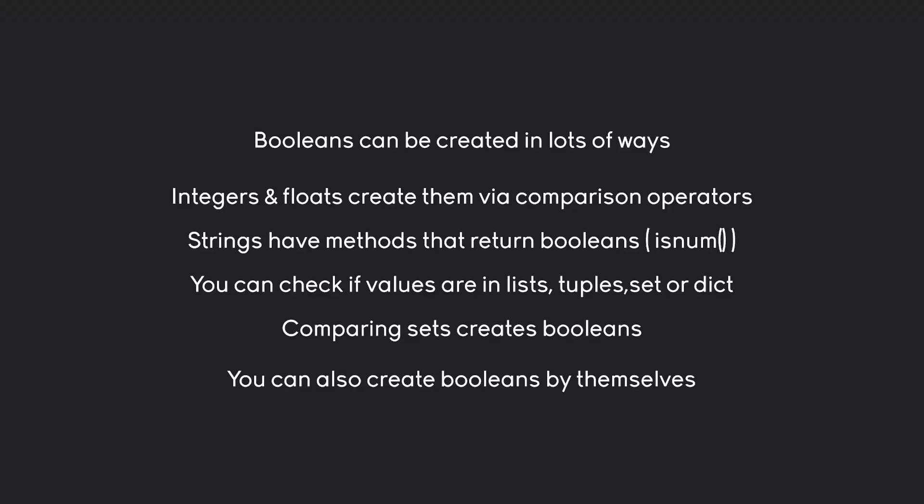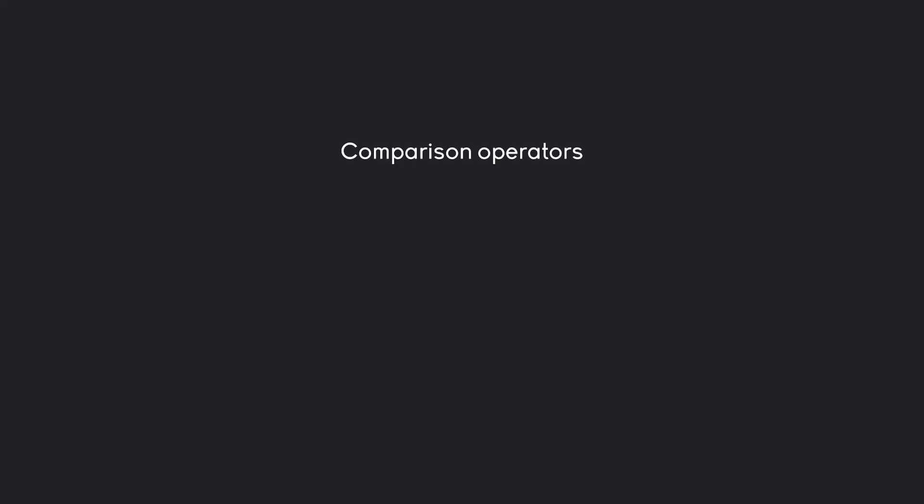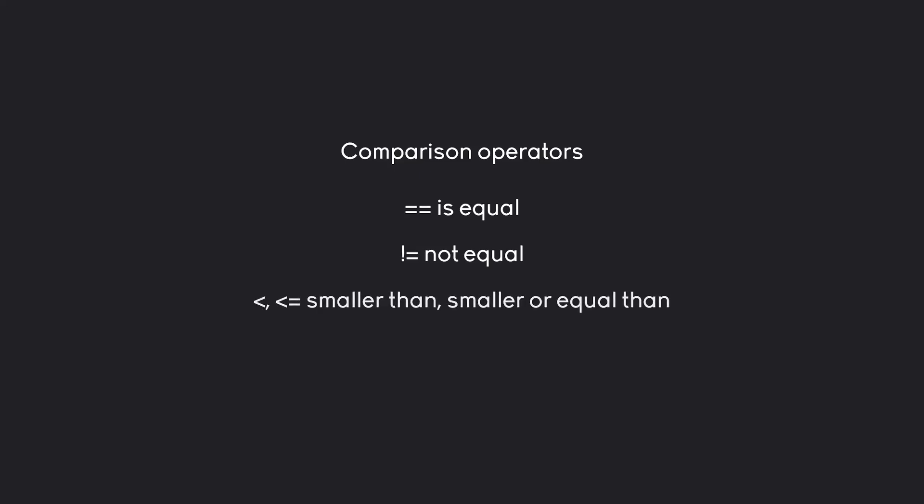Let's go through this entire list and start with comparison operators — there are quite a few. The one we just used is the double equal sign, which checks if two values are equal. We use two because a single equal sign is reserved to assign a data type to a variable. To check if two numbers are not equal, we have the exclamation mark equal operator. Finally, we have smaller-than and smaller-or-equal to check those conditions, and greater-than and greater-or-equal work in the same way. Those are the main comparison operators.